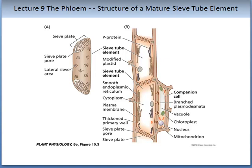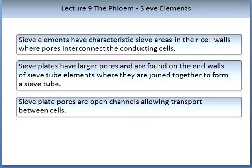Also, in part B of this figure, you will see sieve tube elements along with companion cells. Sieve elements have characteristic sieve areas in their cell walls, where pores interconnect the adjoining cells. Sieve plates have larger pores and are found on the end walls of the sieve tube elements, where they are joined together to form a sieve tube.